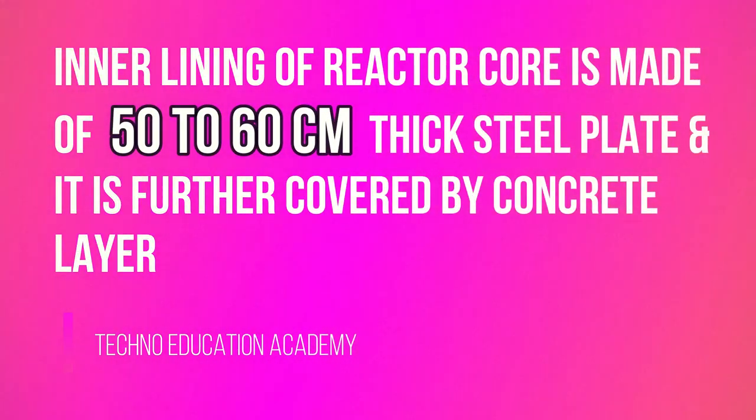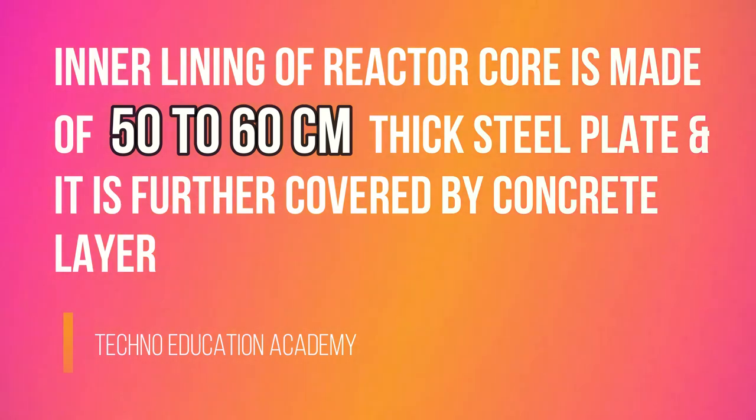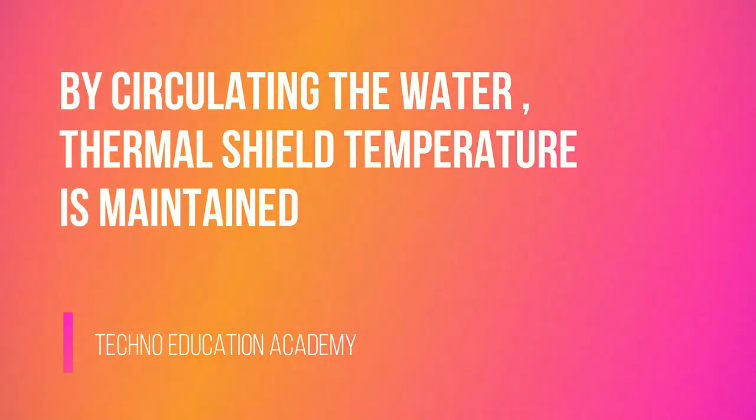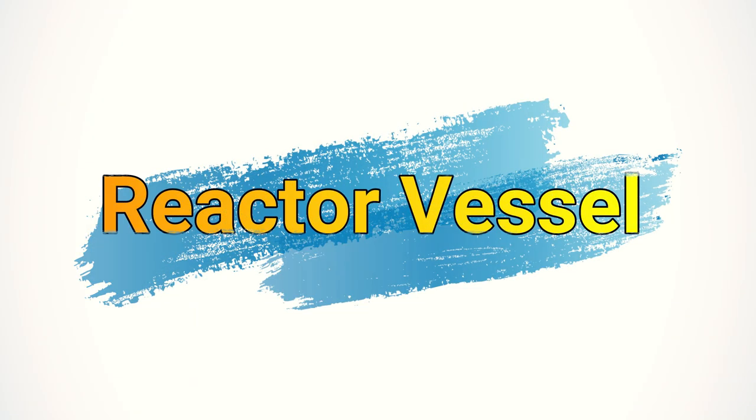Neutrons, gamma rays, and all other radiations are effectively absorbed by concrete and steel. The inner lining of the reactor core is made of 50 to 60 centimeter thick steel plate and is further covered by concrete layer. By circulating water, the thermal shield temperature is maintained.